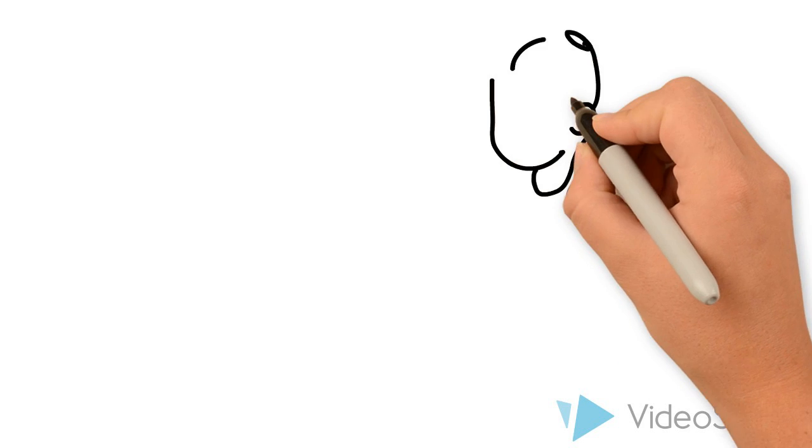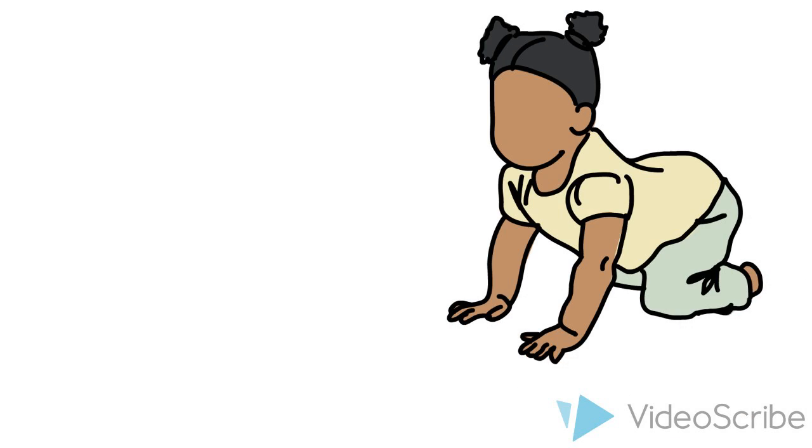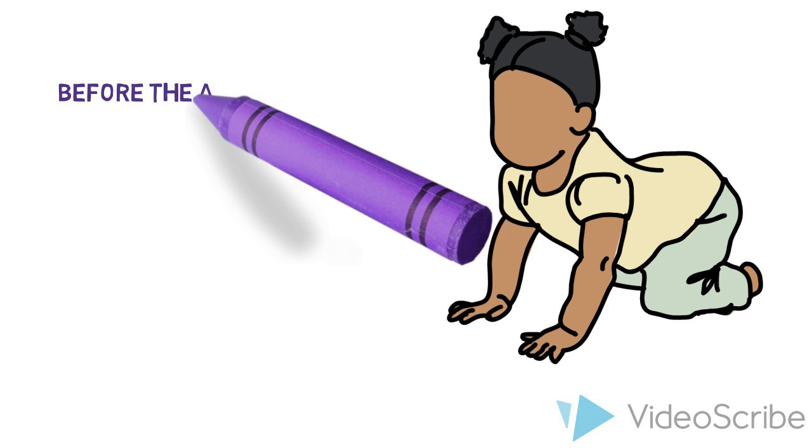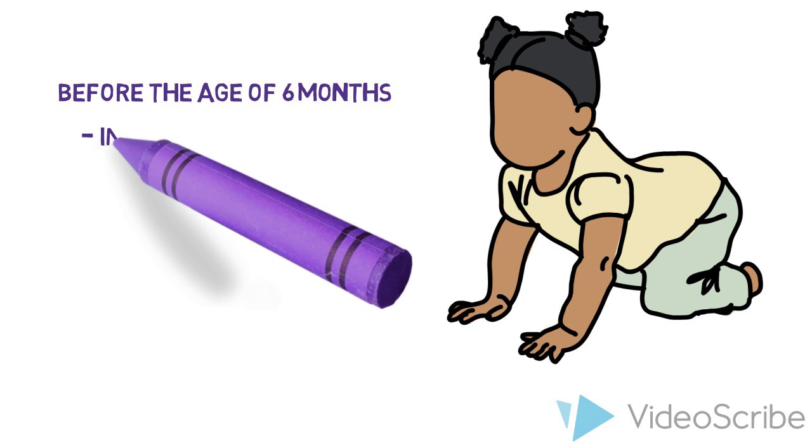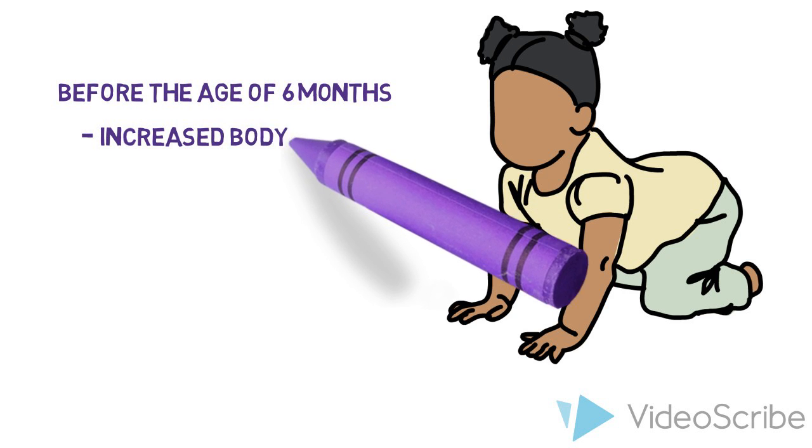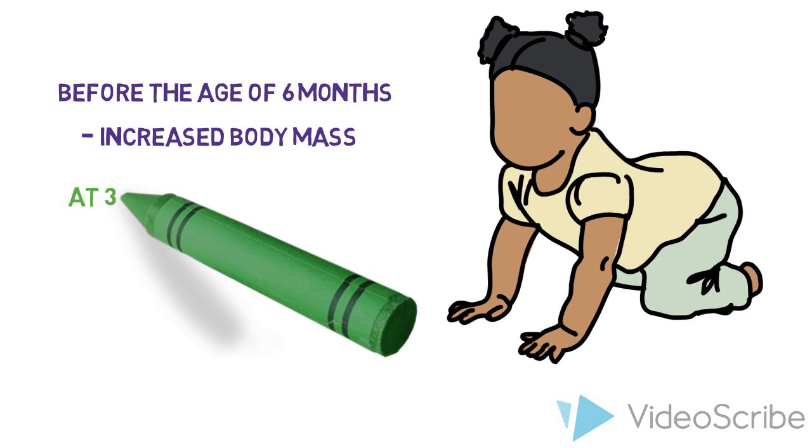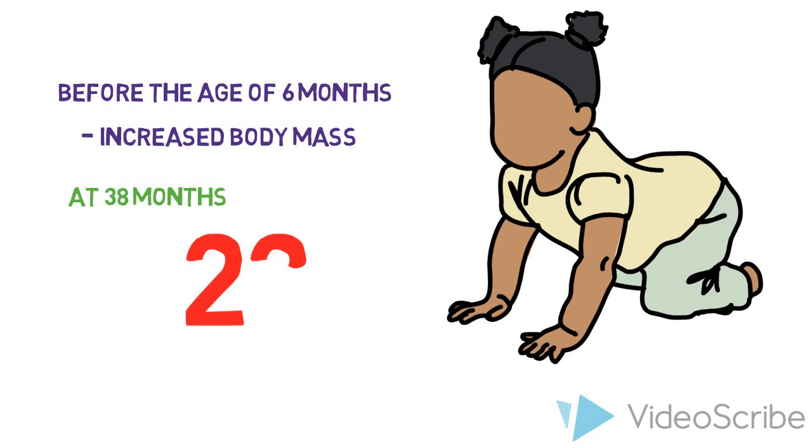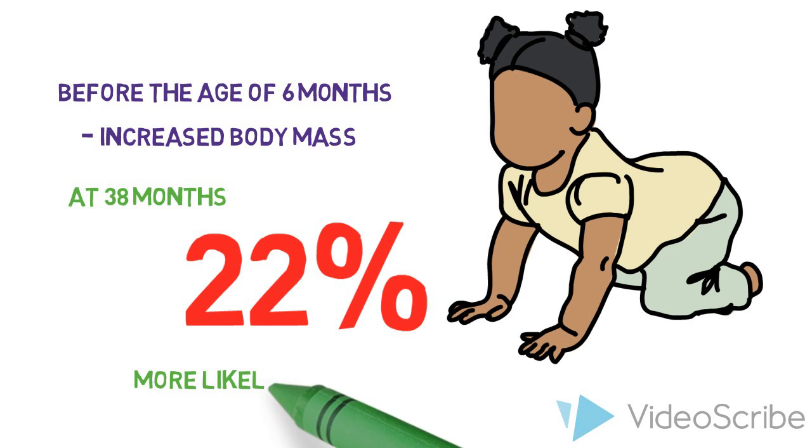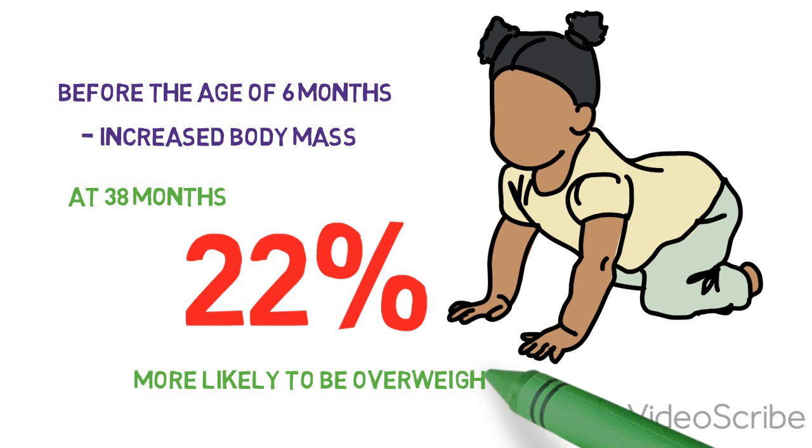A longitudinal study published in the International Journal of Obesity found that infants exposed to antibiotics before the age of 6 months had an increased body mass. At 38 months, these children were 22% more likely to be overweight than children that were not exposed to antibiotics during that time.